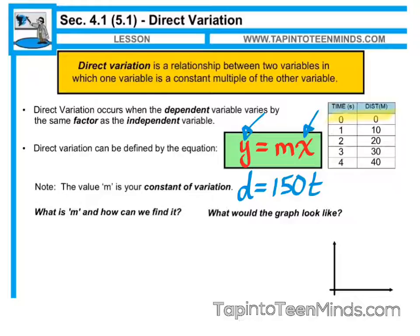We call m the constant of variation. And we can find the constant of variation in a direct variation by simply looking at the table and finding what we call the first differences, or the differences between our y values.